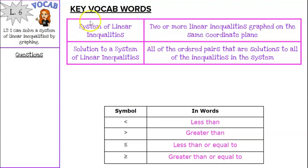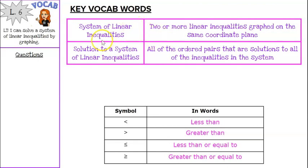First off, some key vocab words. A system of linear inequalities is two or more linear inequalities graphed on the same coordinate plane — very similar to systems of linear equations, except instead of an equation, you have an inequality. The solution to a system of linear inequalities is all the ordered pairs that are solutions to all of the inequalities in the system.